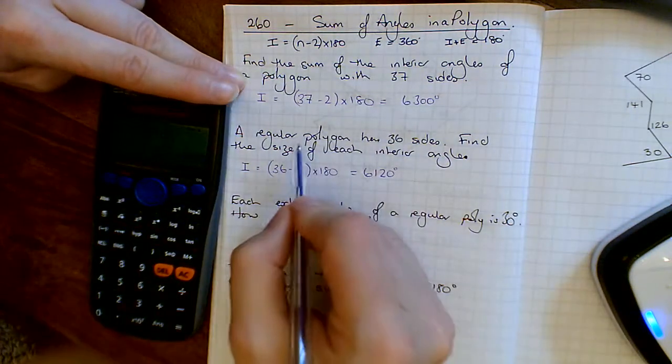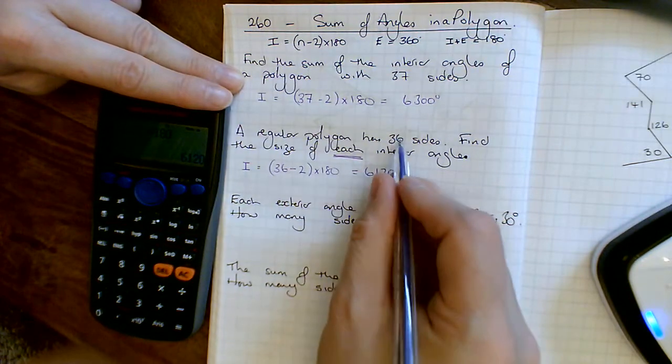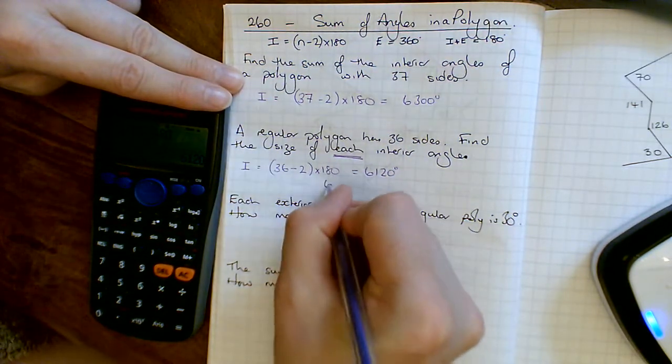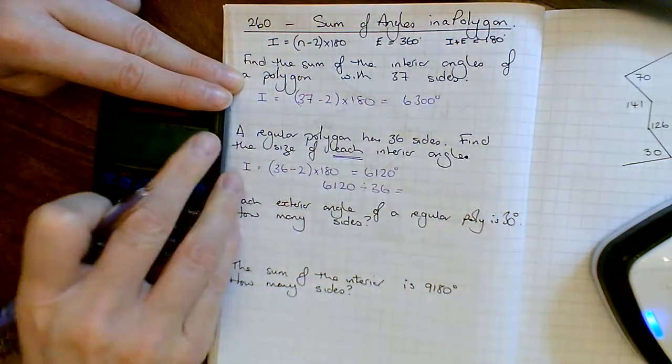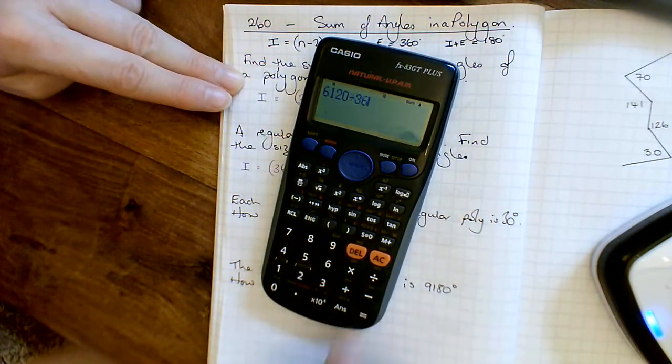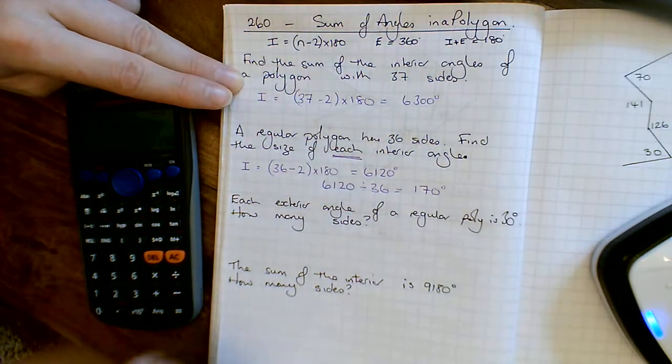But it says find the size of each interior angle. Now I know there's 36 of them, and they're all going to add up to this one, so one of them must be 6120 divided by 36, and that'll tell me how much one is. So I do 6120 divided by 36, and I get 170 degrees. So each angle there is 170 degrees.